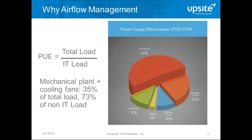PUE stands for power usage effectiveness and it's a very simple metric to calculate — the total load of the entire data center divided by the IT load. Mechanical cooling and cooling fans represent 35% of the total load and 73% of the non-IT load, in strong comparison to electrical losses being only 10%. There's a lot of effort being made to improve efficiency of infrastructure, and while looking at UPS efficiency is a good idea, it has a relatively small effect on the total equation.